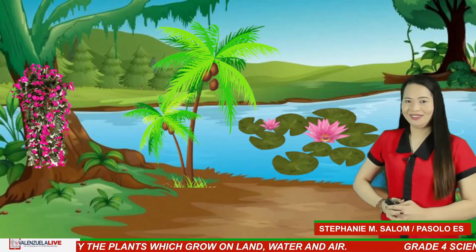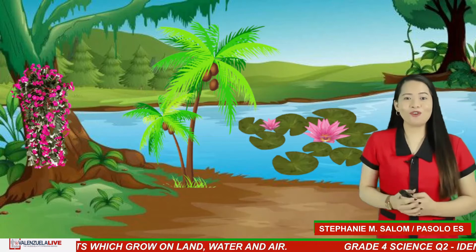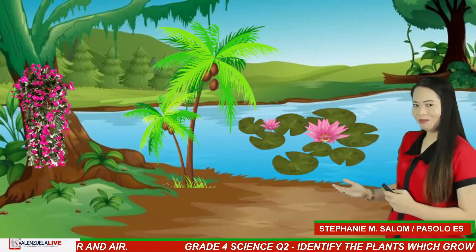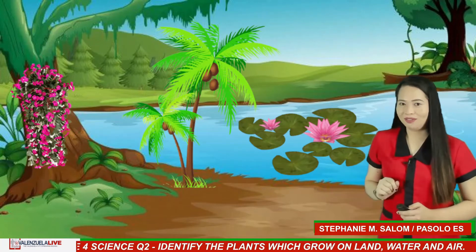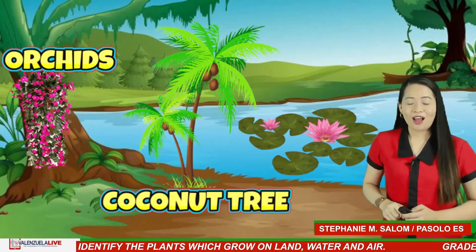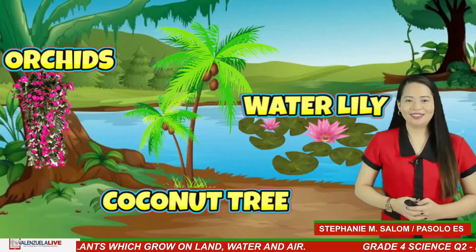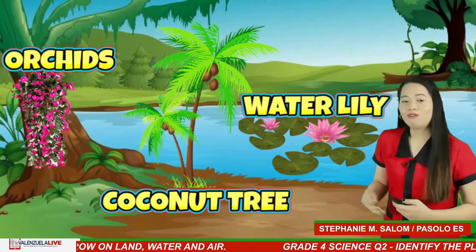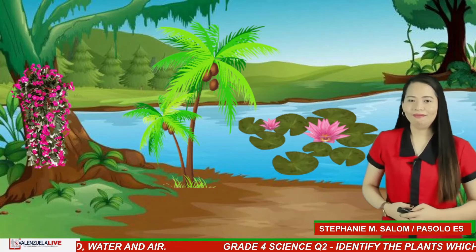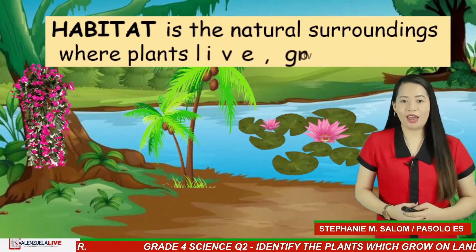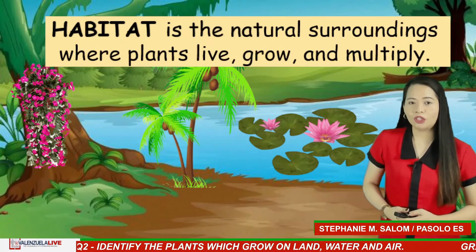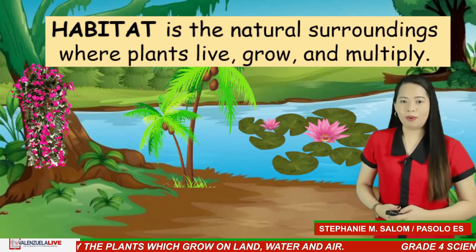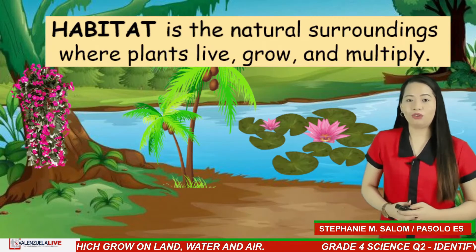Where do you think am I? I'm in the middle of a forest where you can find trees and water. Can you find different plants here? If you're thinking about orchids, a coconut tree, and a water lily — that's correct. Plants can be seen anywhere and everywhere. Different kinds of plants grow in different habitats. Habitat is the natural surroundings where plants live, grow, and multiply. They grow in different places depending on their structures and needs.